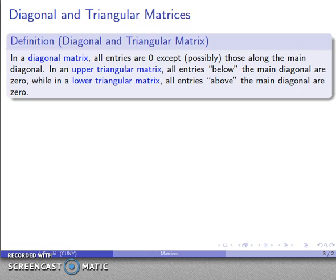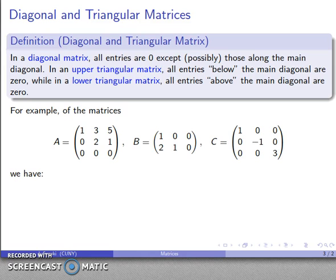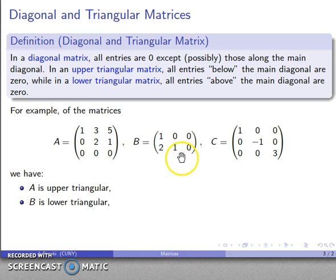A particularly useful classification is diagonal and triangular matrices. In a diagonal matrix, all entries are zero except possibly those along the main diagonal. In an upper triangular matrix, all entries below the main diagonal are zero, so non-zero entries are concentrated above the main diagonal. In a lower triangular matrix, all entries above the main diagonal are zero. Matrix A is upper triangular, matrix B is lower triangular, and matrix C is a diagonal matrix.